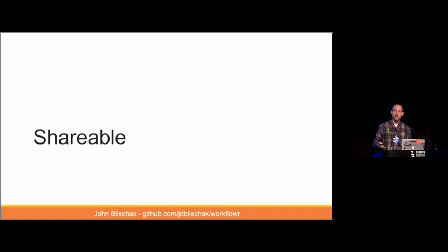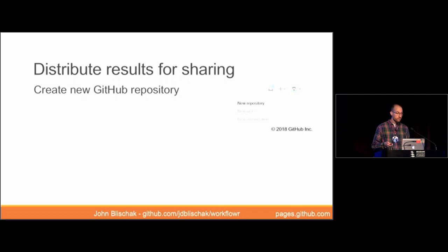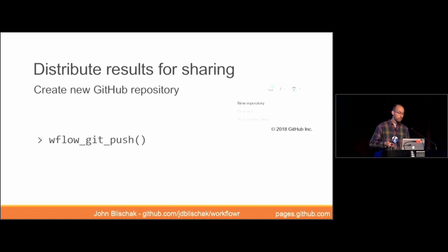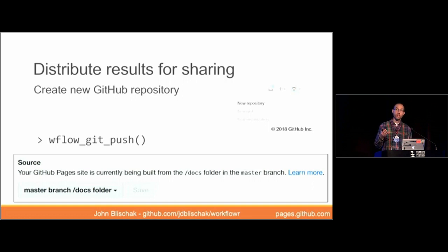WorkflowR provides instructions to deploy your website to make it shareable. If you don't have access to a web server, the easiest way is to follow a few steps on GitHub: create a new GitHub repository, then back in your R session run the function wflow_git_push, which is a wrapper for the git push command and sends all your code and website up to GitHub. Lastly, go into the settings of your new GitHub repository and activate GitHub Pages to serve from the docs subdirectory. In the future, any time you push new changes, the website is instantly updated so anyone going to it sees the latest results.